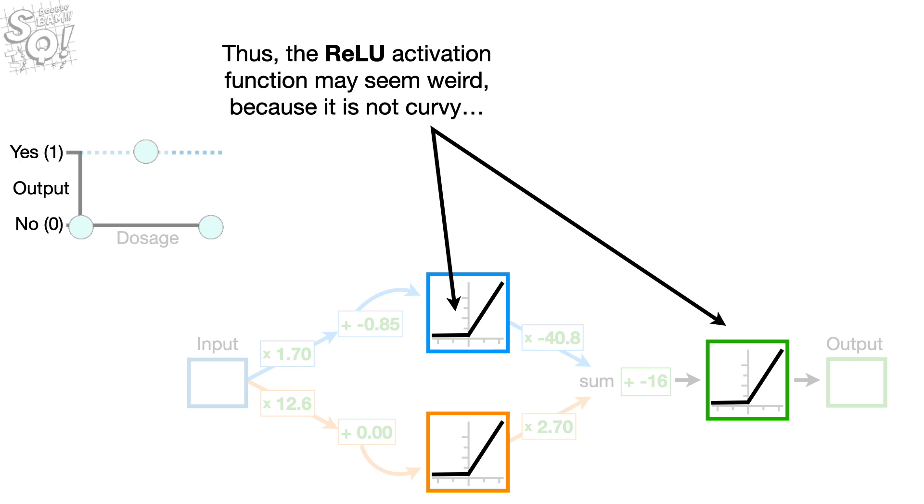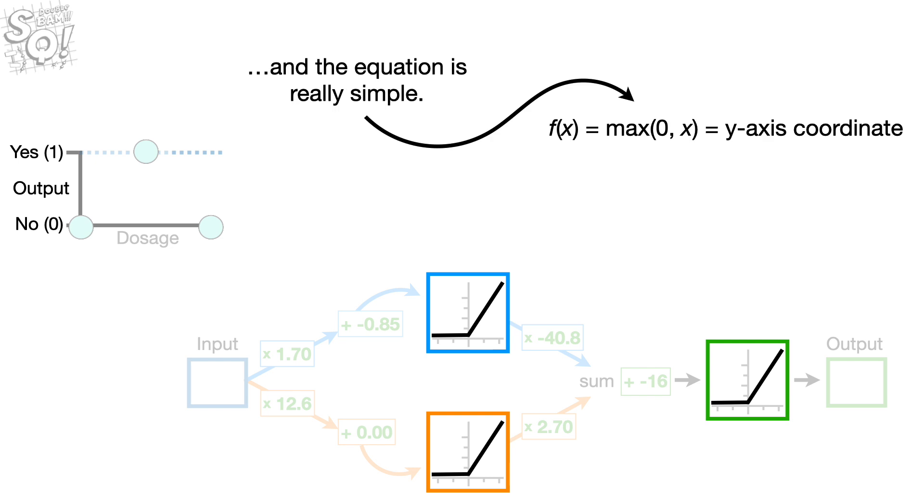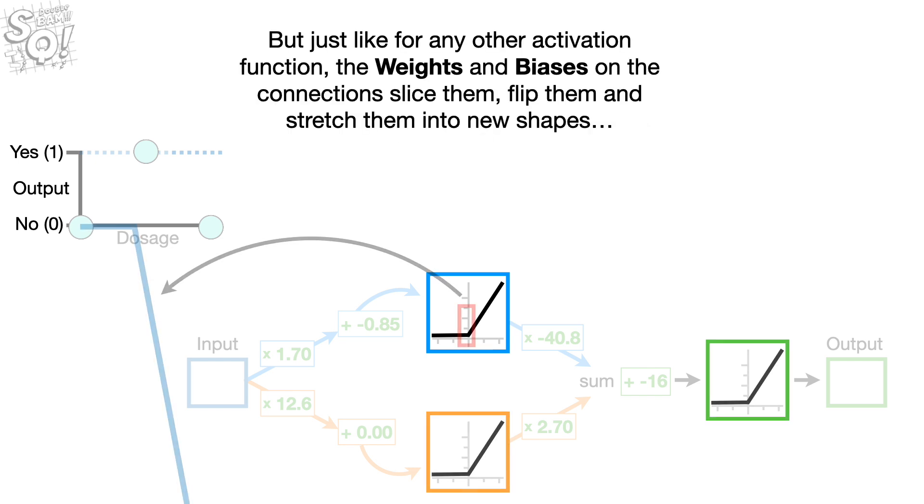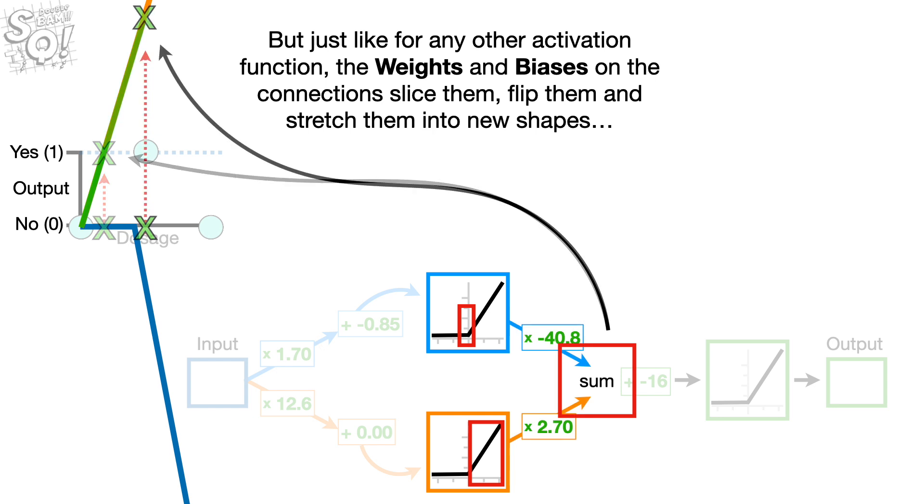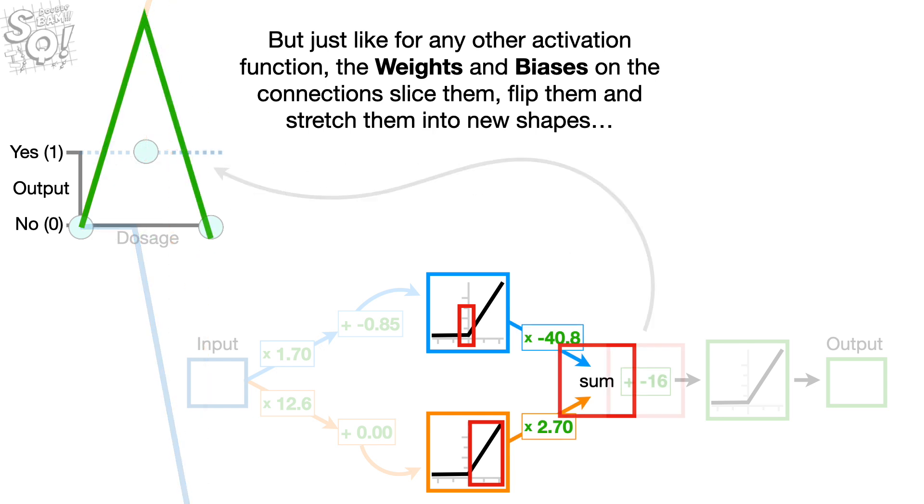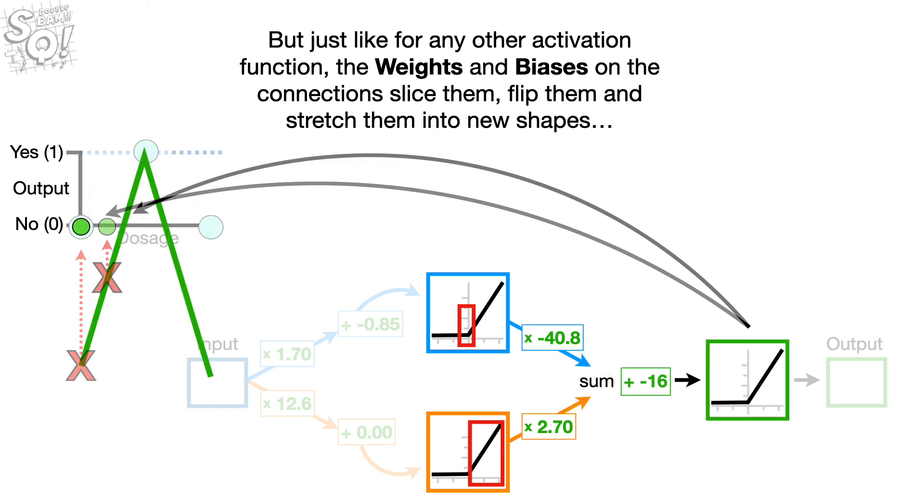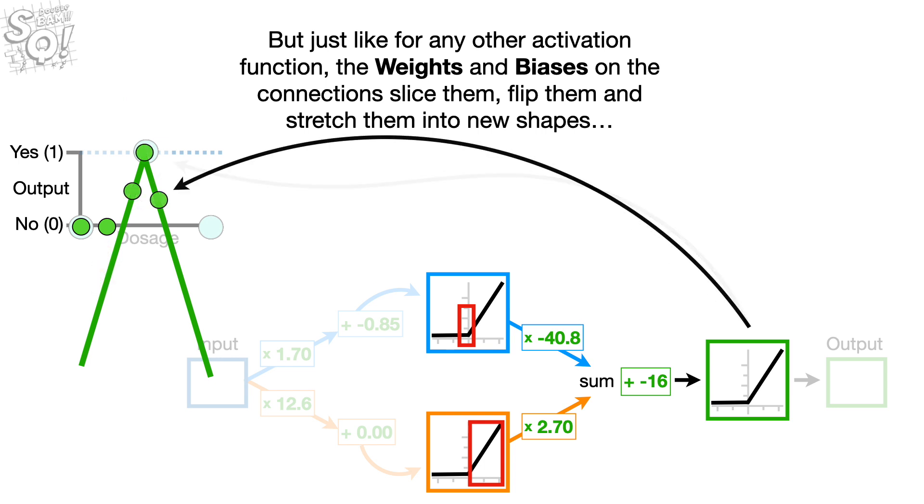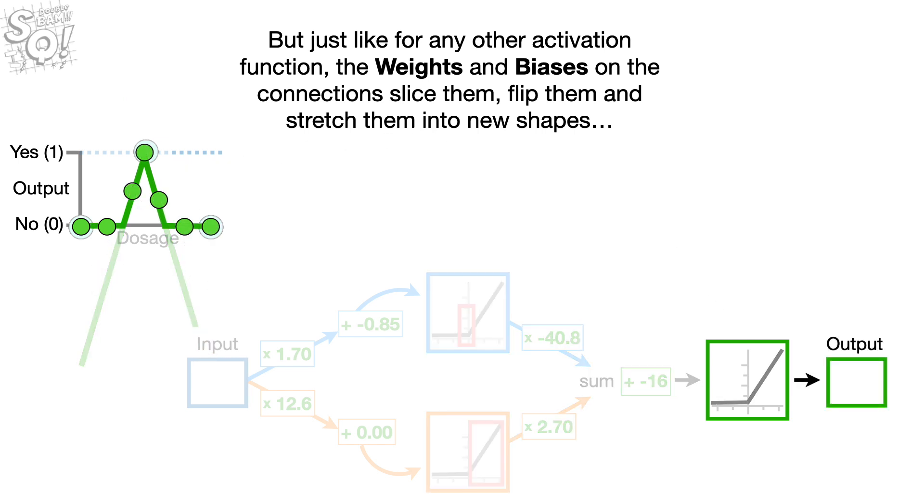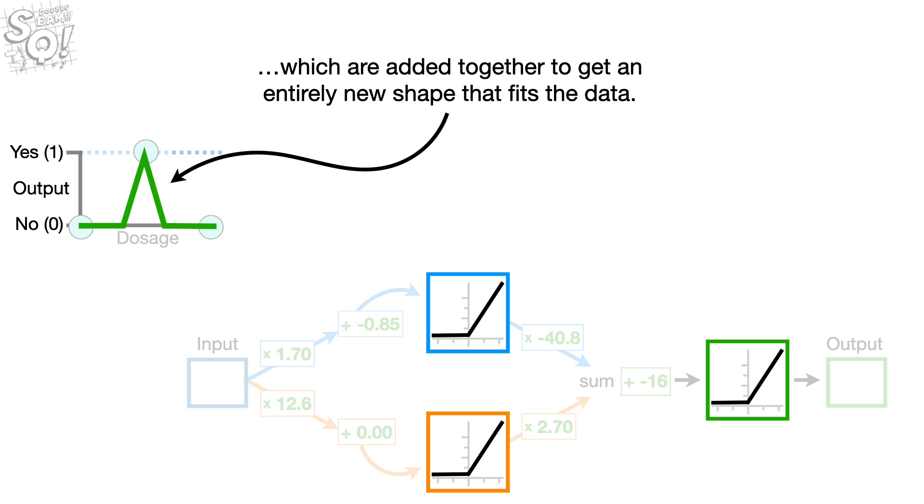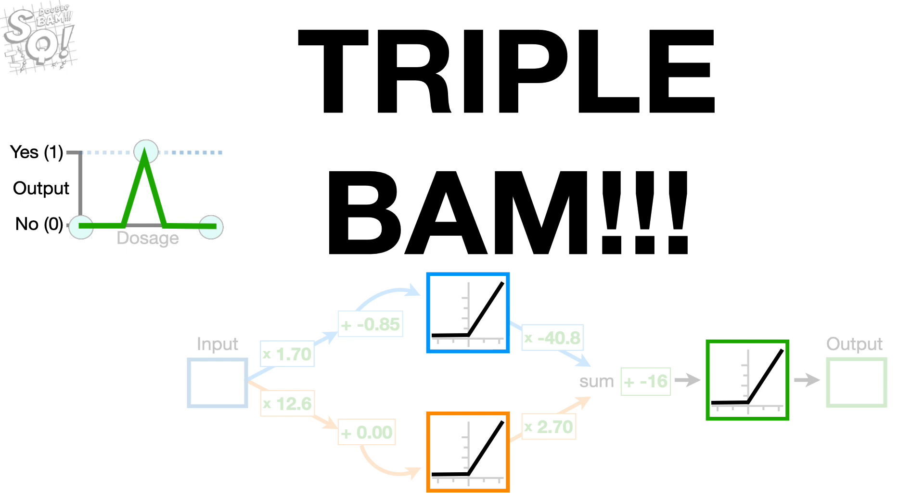Thus, the relu activation function may seem weird because it's not curvy, and the equation is really simple. But just like for any other activation function, the weights and biases on the connections slice them, flip them, and stretch them into new shapes, which are added together to get an entirely new shape that fits the data. Triple bam!